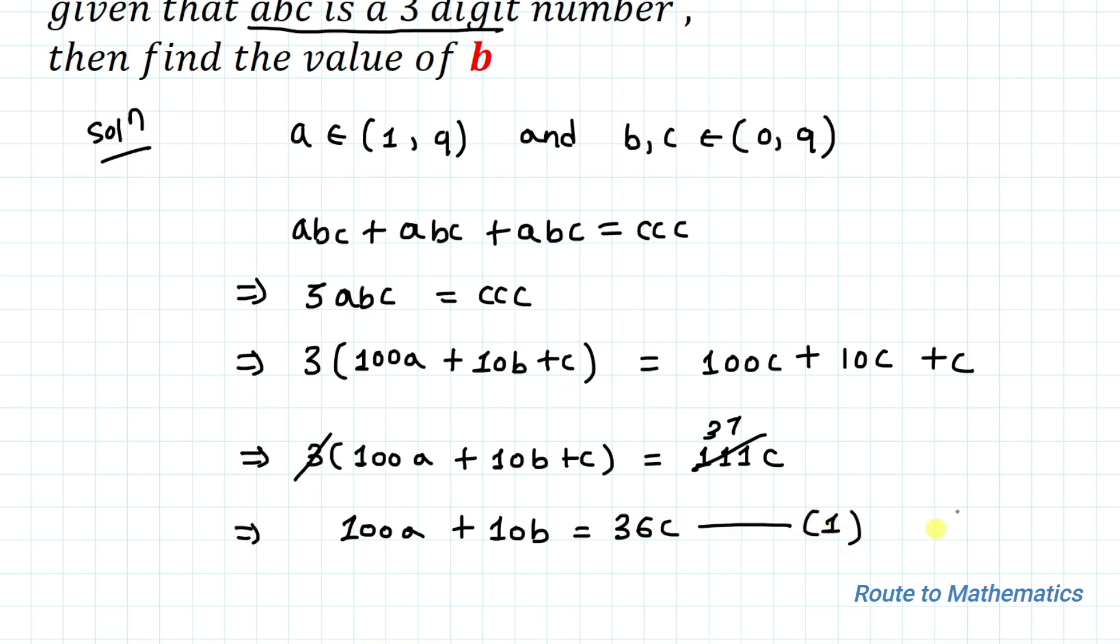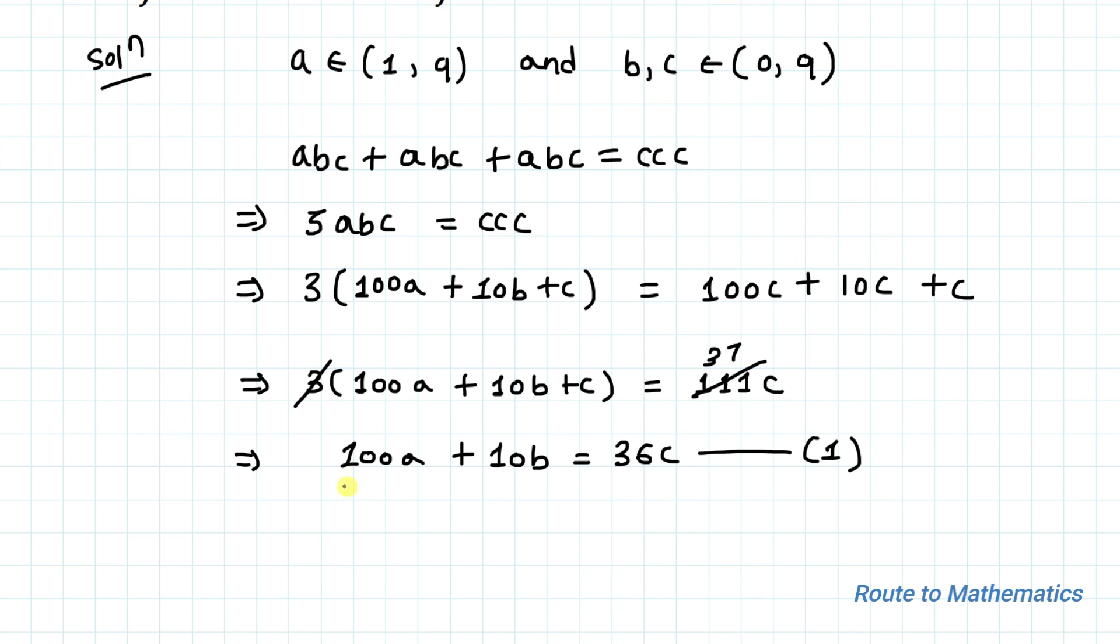Let's take it as equation 1. From equation 1, you can see that the left-hand side is a multiple of 10. This implies C can be either 0 or C equals 5.